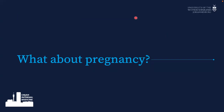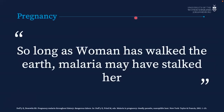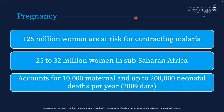Now let's talk about pregnancy. As this 2001 article states: 'So long as woman has walked the earth, malaria may have stalked her.' The first reported case of malaria in pregnancy was only in the late 1800s, but we now know that 125 million women are at risk. About 32 million live in sub-Saharan Africa. Malaria accounts for about 10,000 maternal deaths per year and 200,000 neonatal deaths per year due to growth restriction, preterm delivery, and low birth weight.